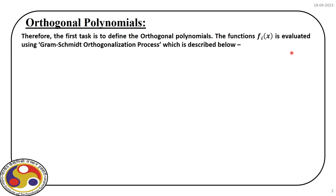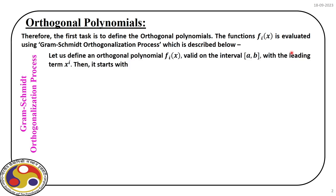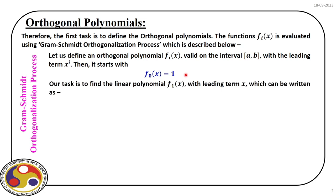We define a function f_i(x) that we expect to be orthogonal. This orthogonal polynomial is valid within an interval a to b and has a leading term x to the power i. It starts with a seed: f_0(x) is assumed to be 1. Our task is to find the next orthogonal polynomial f_1(x). As per our definition the leading term is x to the power 1, so the polynomial has the form x plus k_{1,0} times f_0(x).